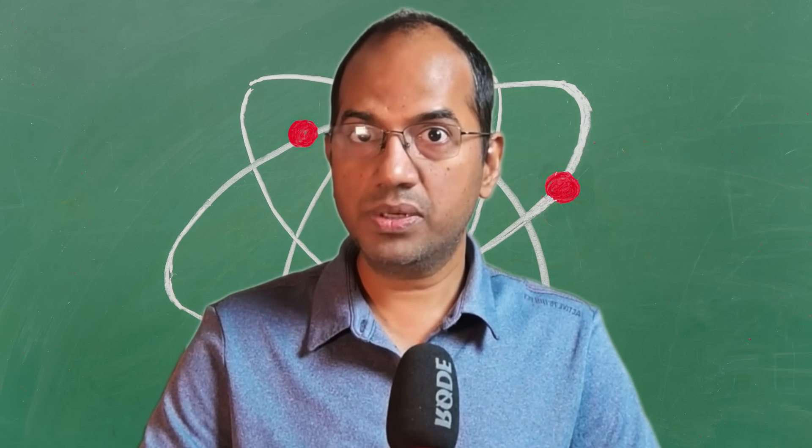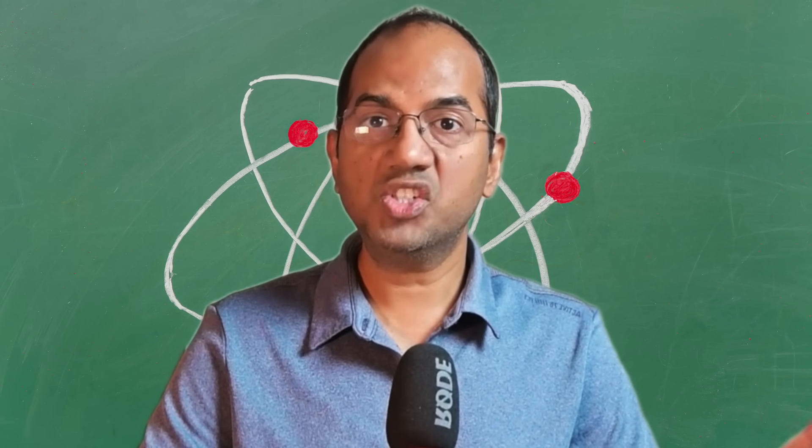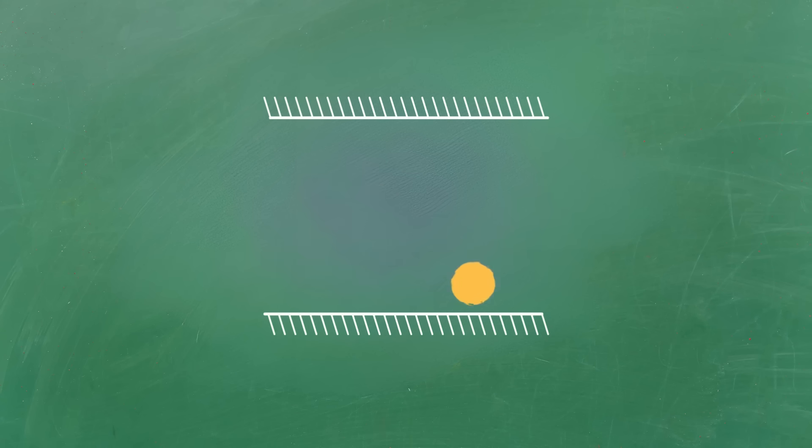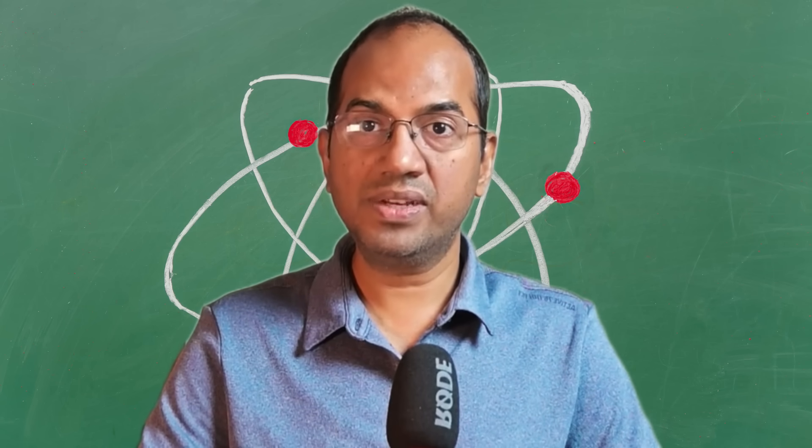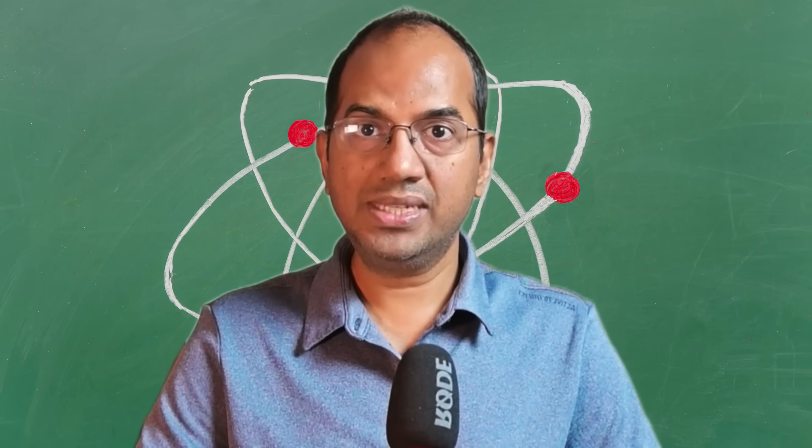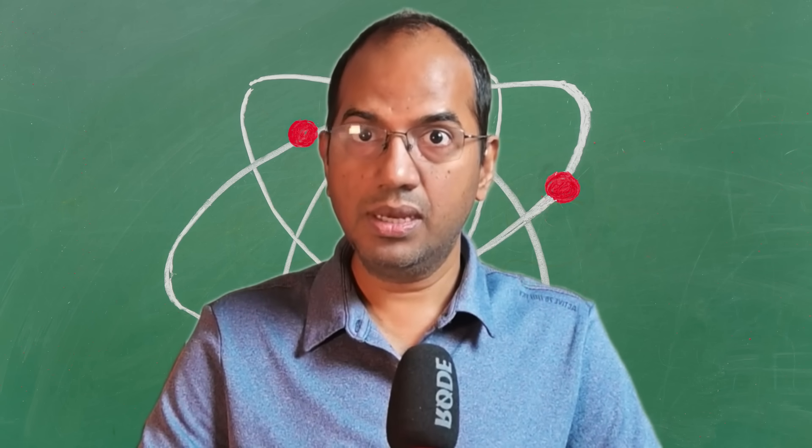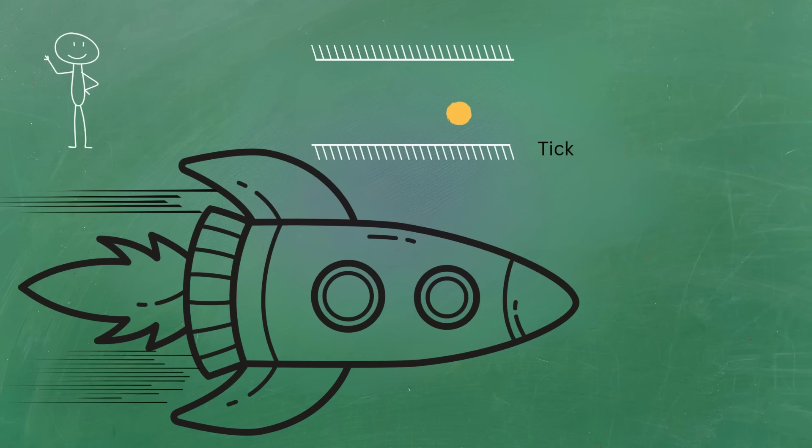But what do you, the person on the ground, see as the ship zooms by? You don't see the photon going straight up and down because the clock is moving sideways. So you see the photon travel a longer diagonal path. It has to travel up at an angle to hit the moving top mirror and then back down at an angle to hit the moving bottom mirror.